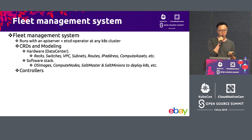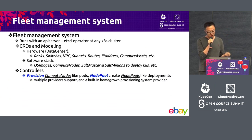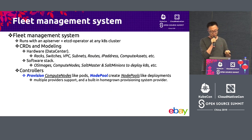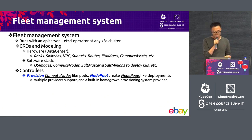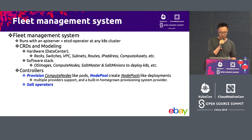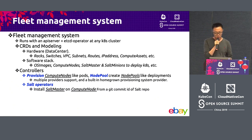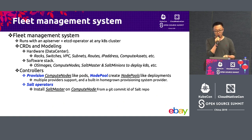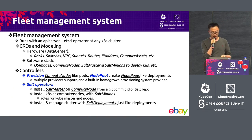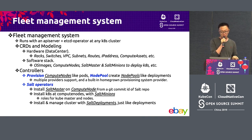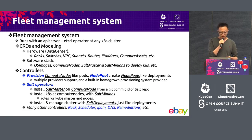Once you have all those CRDs and models, you write a lot of controllers. We write provisioning controllers that provision compute nodes just like Kubernetes creates pods. The node pool controller will create a set of compute nodes with the exact same setup and config. We support multiple providers, and we have a homegrown bare metal provisioning system that I'll talk about later. We also have a very powerful salt operator that can build Kubernetes with Salt. We can install salt master on the compute node from a git commit ID, and then build a cluster out of it.